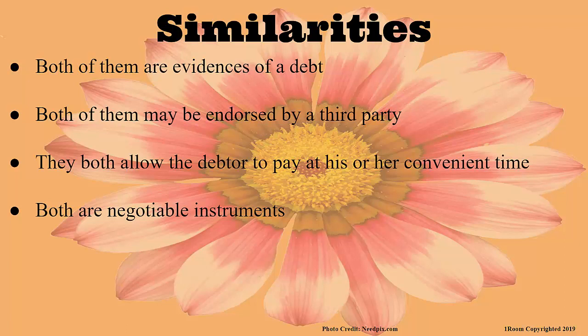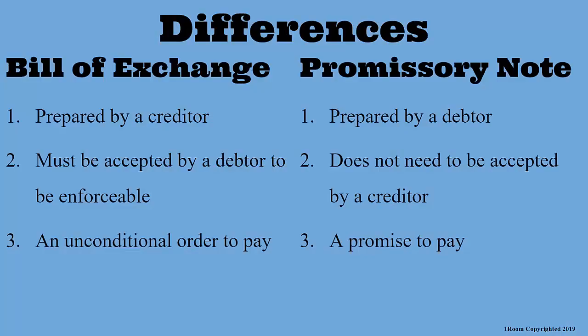And the differences? One of them is that the bill of exchange is prepared by the creditor while the promissory note is prepared by the debtor. A bill of exchange has to be accepted by the debtor for it to be legally binding, but a promissory note does not necessarily have to be accepted by the creditor. Also, the bill of exchange is an unconditional order to pay, whereas a promissory note is just a promise to pay.